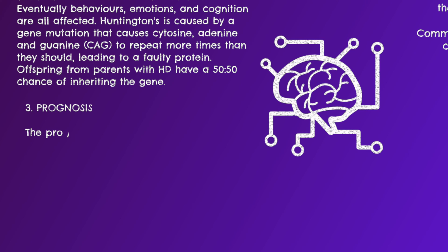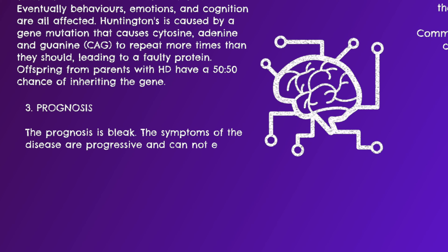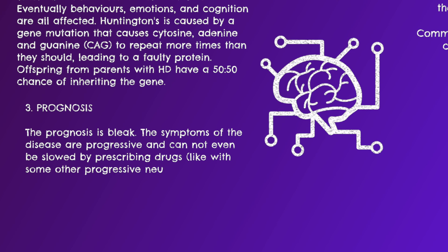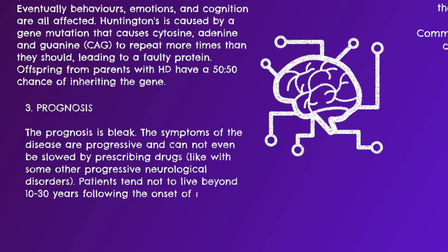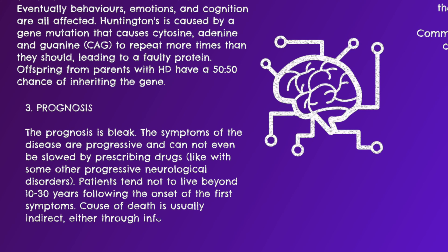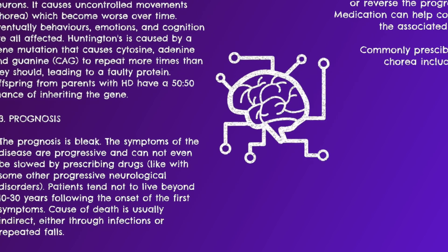The prognosis is bleak. The symptoms of the disease are progressive and cannot be slowed by prescribing drugs, unlike some other progressive neurological disorders. Patients tend not to live beyond 10 to 30 years following the onset of the first symptoms. Cause of death is usually indirect, either through infections or repeated falls.